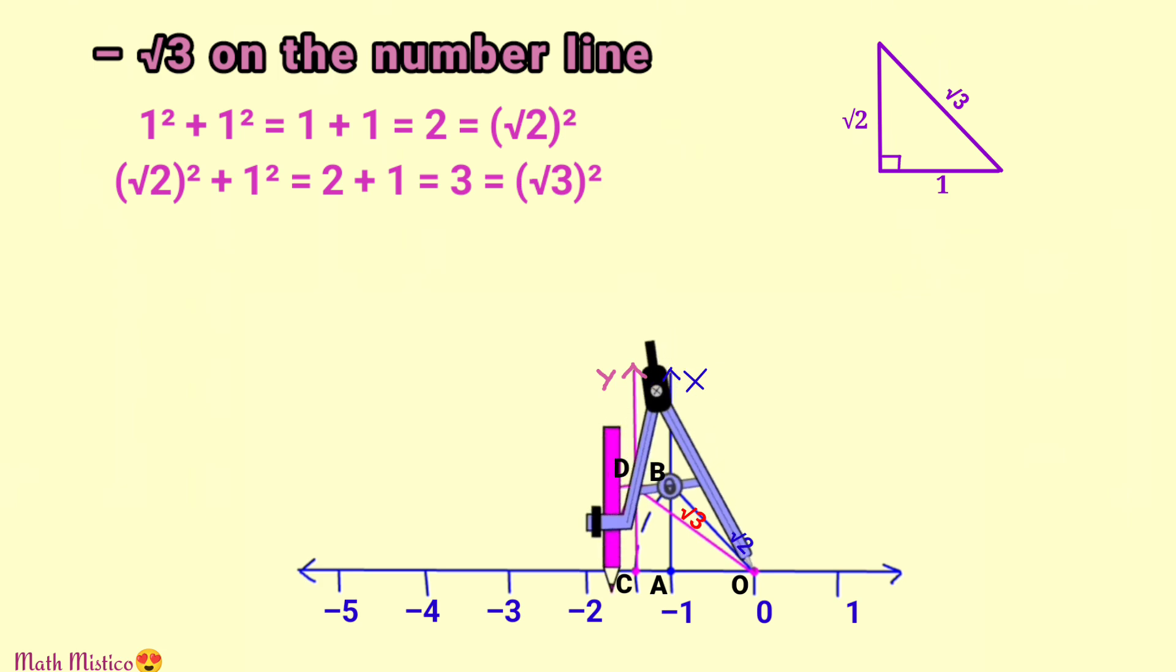The arc intersects the number line on the left side of origin, and as it is the left side, this point will be represented by minus √3. So I hope it is clear how to represent negative roots on the number line. You can follow these steps for minus √5, minus √6, etc. easily.